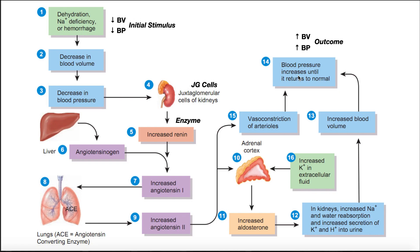This is the basis of the RAAS system. We have renin, angiotensin 2, and aldosterone, and collectively they can take a decreased blood volume and decreased blood pressure and increase it to normal levels.